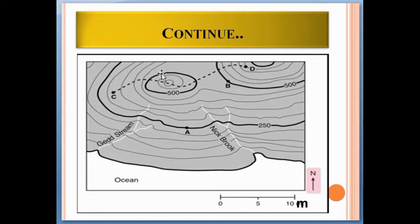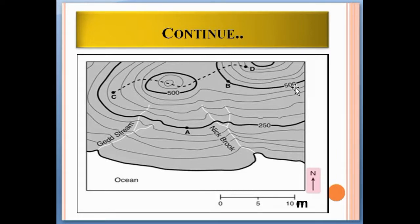Here on this topographic map, this is the contour line of 500 meters and this is the contour line of 250 meters. Contour lines show the elevation of the ground surface by connecting equal points — every point on this line has the same elevation of 250, and every point on this line has the elevation of 500. If the number of a specific contour line is increasing, the elevation is also increasing.